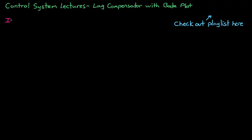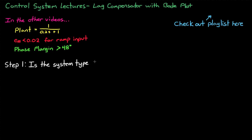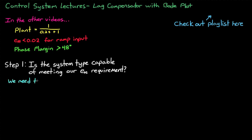In the video on designing a lead compensator using a Bode plot, I walked through a simple design problem where we had a system with a plant of 1 divided by 0.2s plus 1, and we needed to design a control system that gave us less than 2% steady state error for a ramp input, and the system had to have more than 48 degrees of phase margin. Step 1 was to determine if the system type is sufficient to meet the steady state error requirement. Since we have a finite steady state error requirement to a ramp input, we need a type 1 system, or at least a single pole at the origin. So we added that integrator, 1 over s, to our compensator.